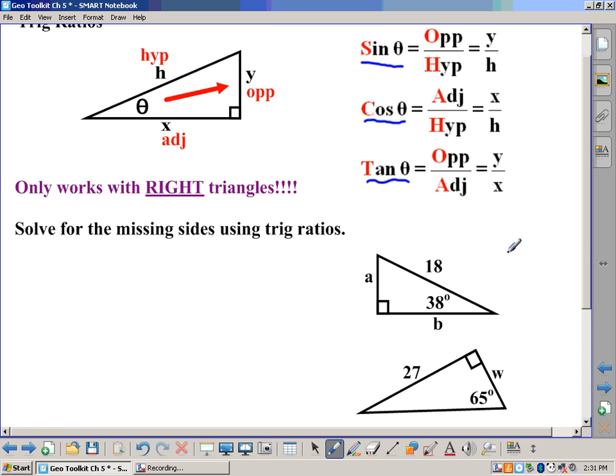All right, so now that you have those triangles written down, let's go ahead and solve these here. So if we're looking at the top triangle here, opposite across from 38 degrees is side A. So I'm going to write OPP here for opposite. The hypotenuse is over here, and that leaves the adjacent side would be B.